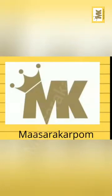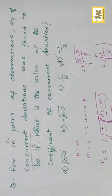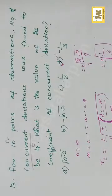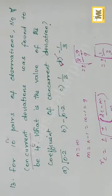Welcome to my channel. Question number 13. For 10 pairs of observation, number of concurrent deviation was found to be 4. What is the value of the coefficient of concurrent deviation?